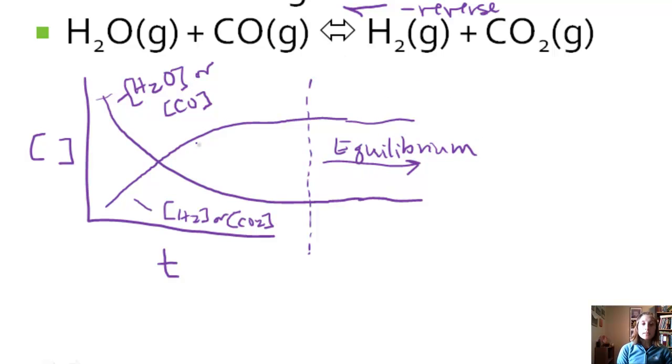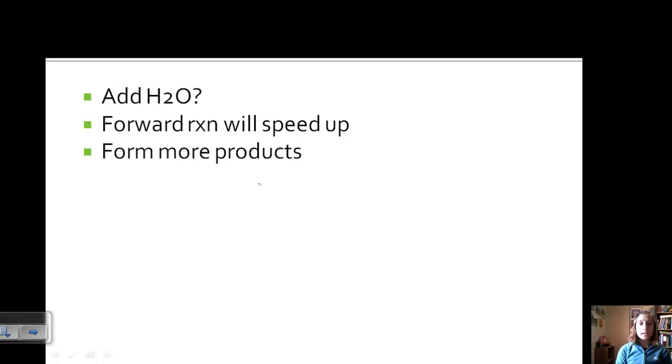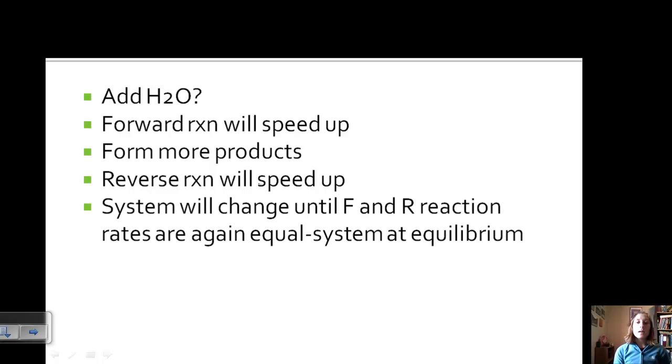We've still got reactants producing products and products producing reactants, but they're at the same rate. What happens if we disturb that equilibrium if we add more water? Well if we add more water, the forward reaction will speed up because water is a reactant. You have more collisions. So that part is going to speed up. And because of that, we're going to form more products. Now if we have more products, there's a higher concentration. We have more product particles colliding and reacting. And then the reverse will also speed up. This will keep occurring until our forward and reverse reaction rates are again equal. The system is now at equilibrium again.